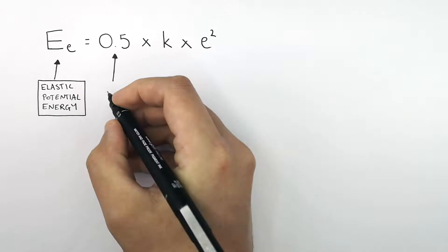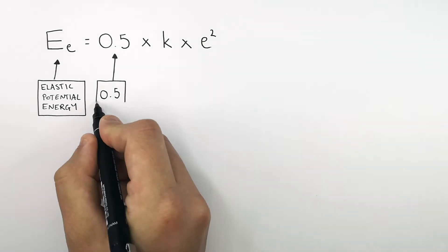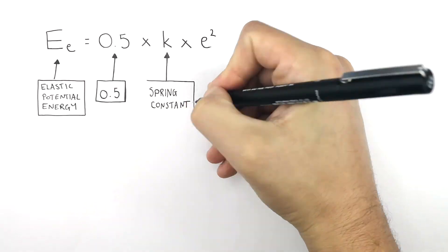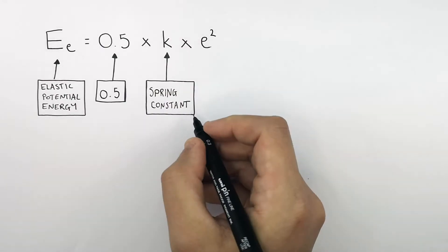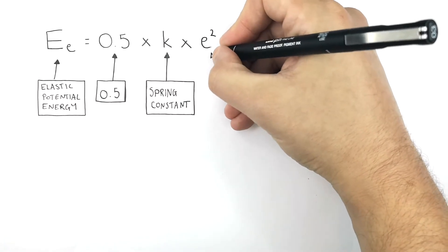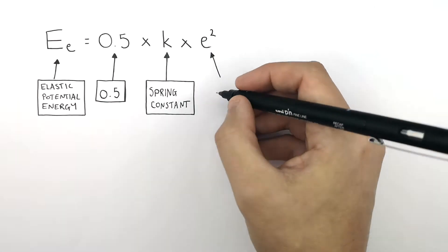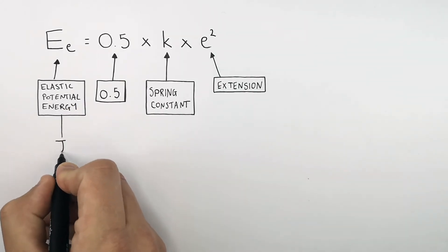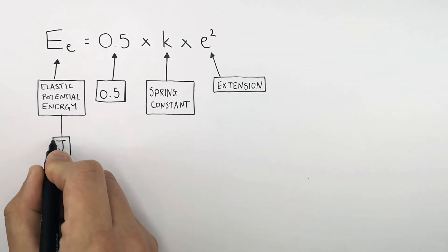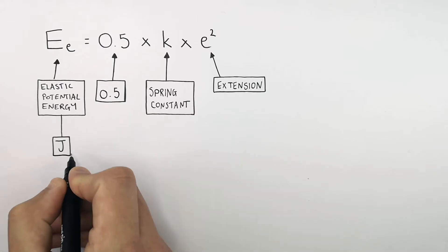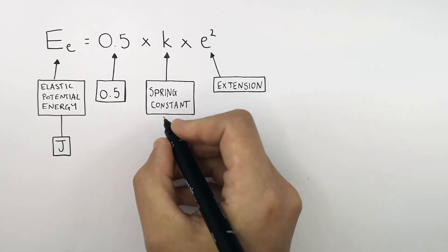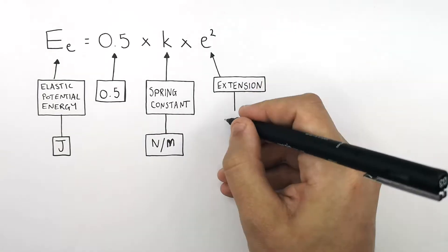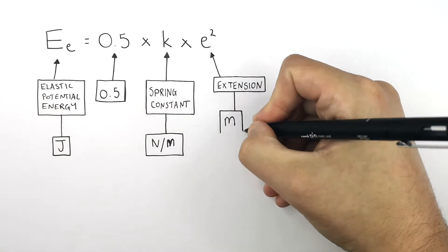0.5 represents 0.5. k is the spring constant of the object, and E squared is the extension squared, where E is the extension. The unit for elastic potential energy stored in an object is joules. There is no unit for 0.5. The unit for spring constant is newtons per metre, and the unit for extension is metres.